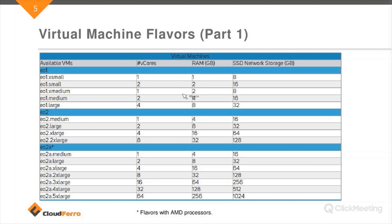Our virtual machine flavors are divided into several groups called EO1 and EO2, and you can choose from various sizes. The sizes depend on the number of vCores, RAM, and also the SSD network storage attached to the virtual machines created using these flavors. Some flavors are based on Intel processors and some on AMD.